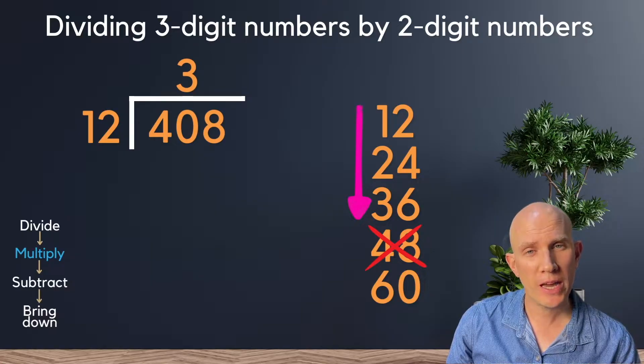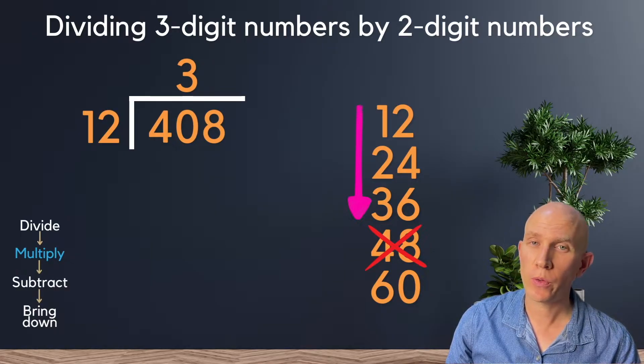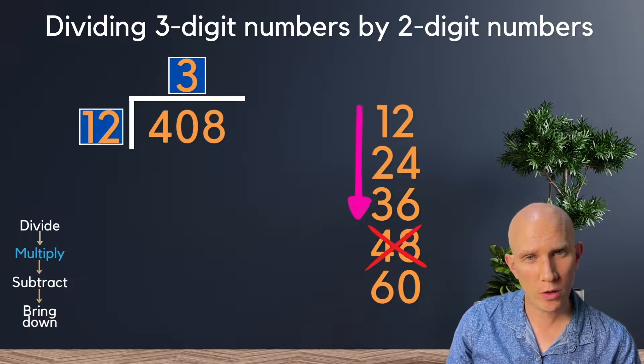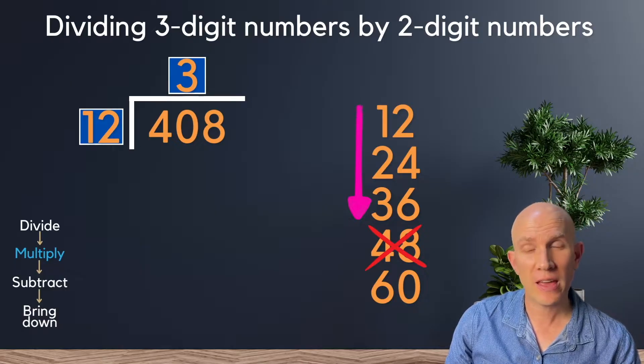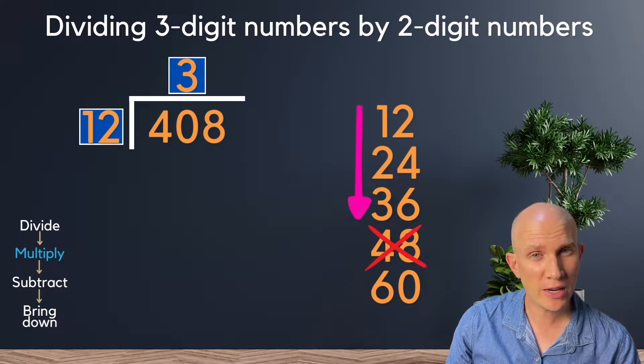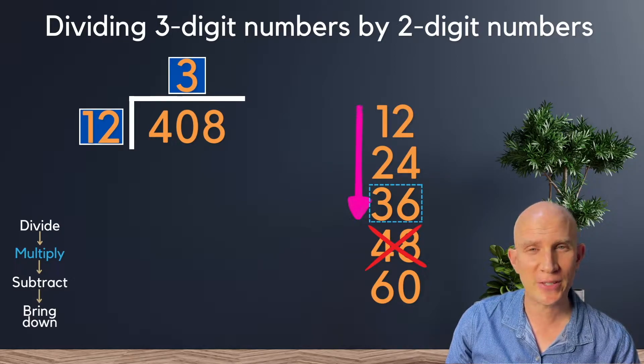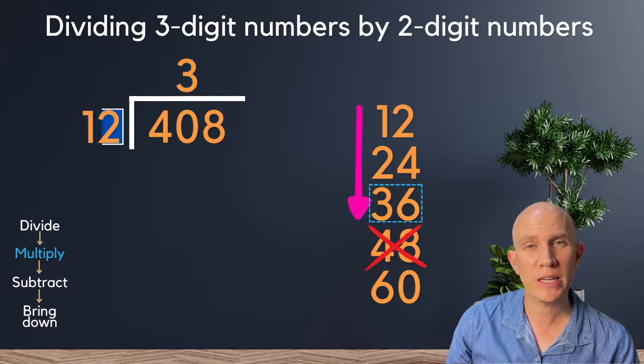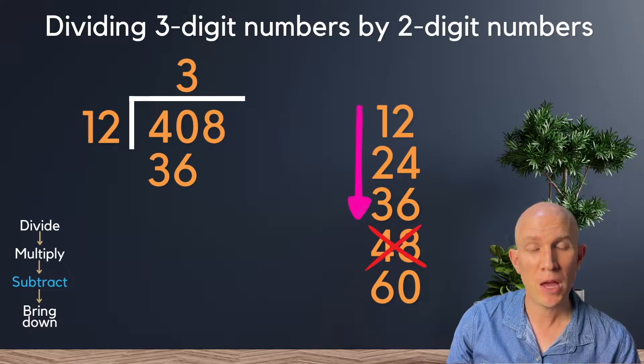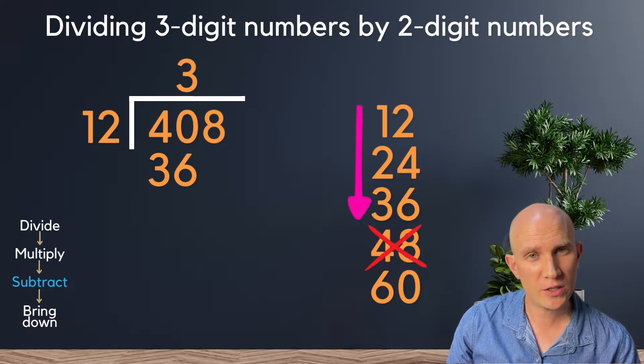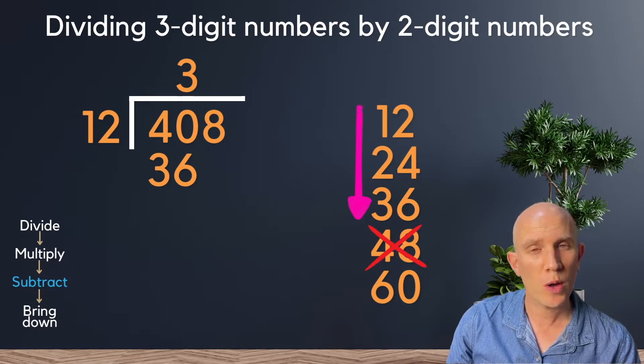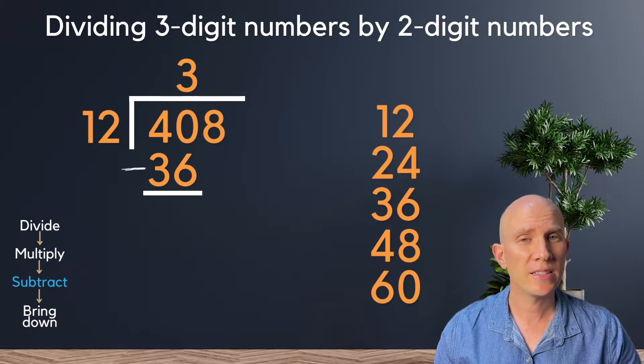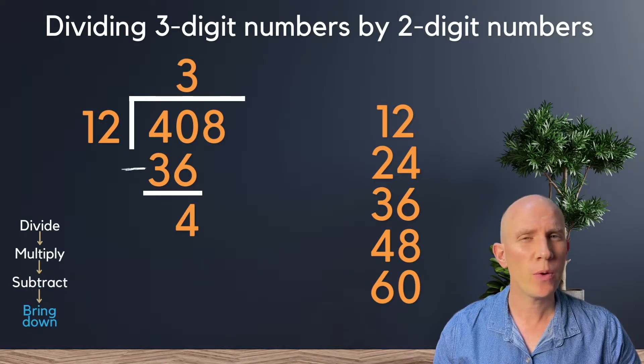Now we can move on to multiplication, where we're going to say 3 times 12 is what? And thankfully, because of our times tables, we don't even need to calculate this, because the answer is right there. So we can just simply write it in. Now we can move straight into subtraction, where we're going to take 40 and take away 36. Now we have 4.